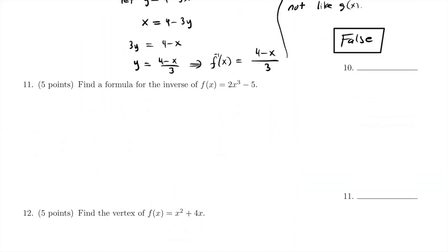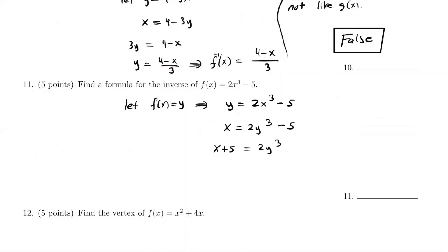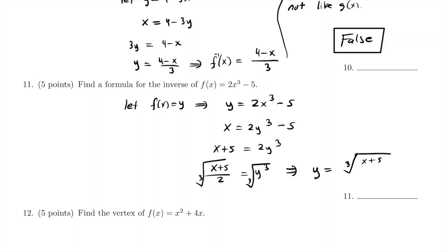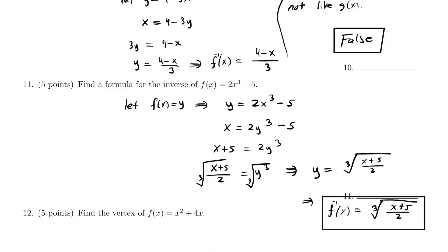For number 11, we find a formula for the inverse function of f(x) = 2x³ − 5. Let y = 2x³ − 5, then switch x and y: x = 2y³ − 5. Add 5 to both sides: x + 5 = 2y³. Divide by 2: (x + 5)/2 = y³. Take the cube root of both sides: y = cube root of (x + 5)/2. So f inverse of x equals the cube root of (x + 5) over 2.